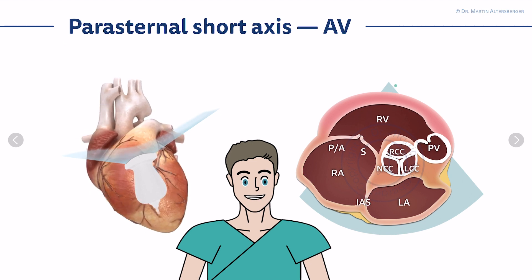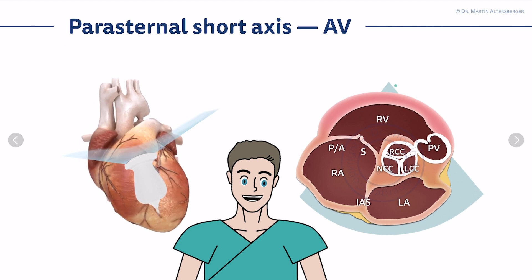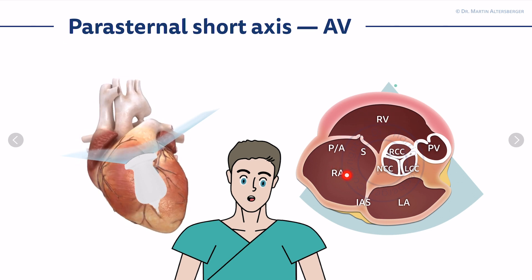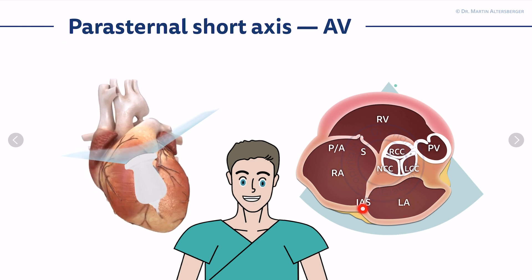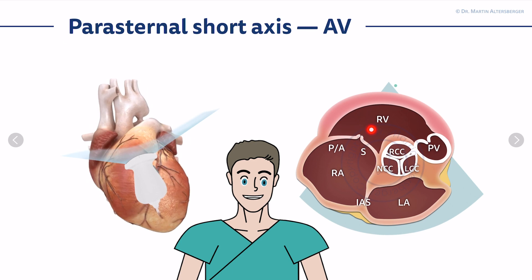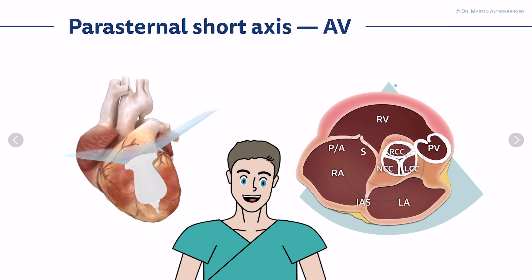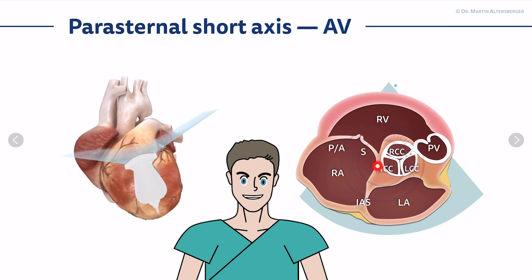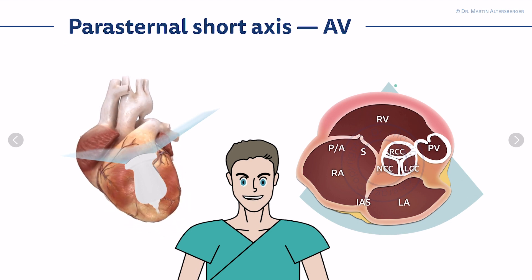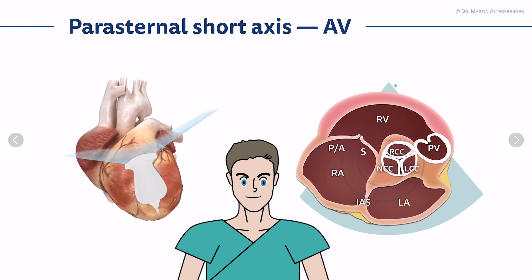There are more structures you can differentiate: the right ventricle, the right atrium, the left atrium, and the interatrial septum in between. The tricuspid valve is a very important structure in the parasternal short axis views, as is the pulmonic valve and even parts of the pulmonic trunk.